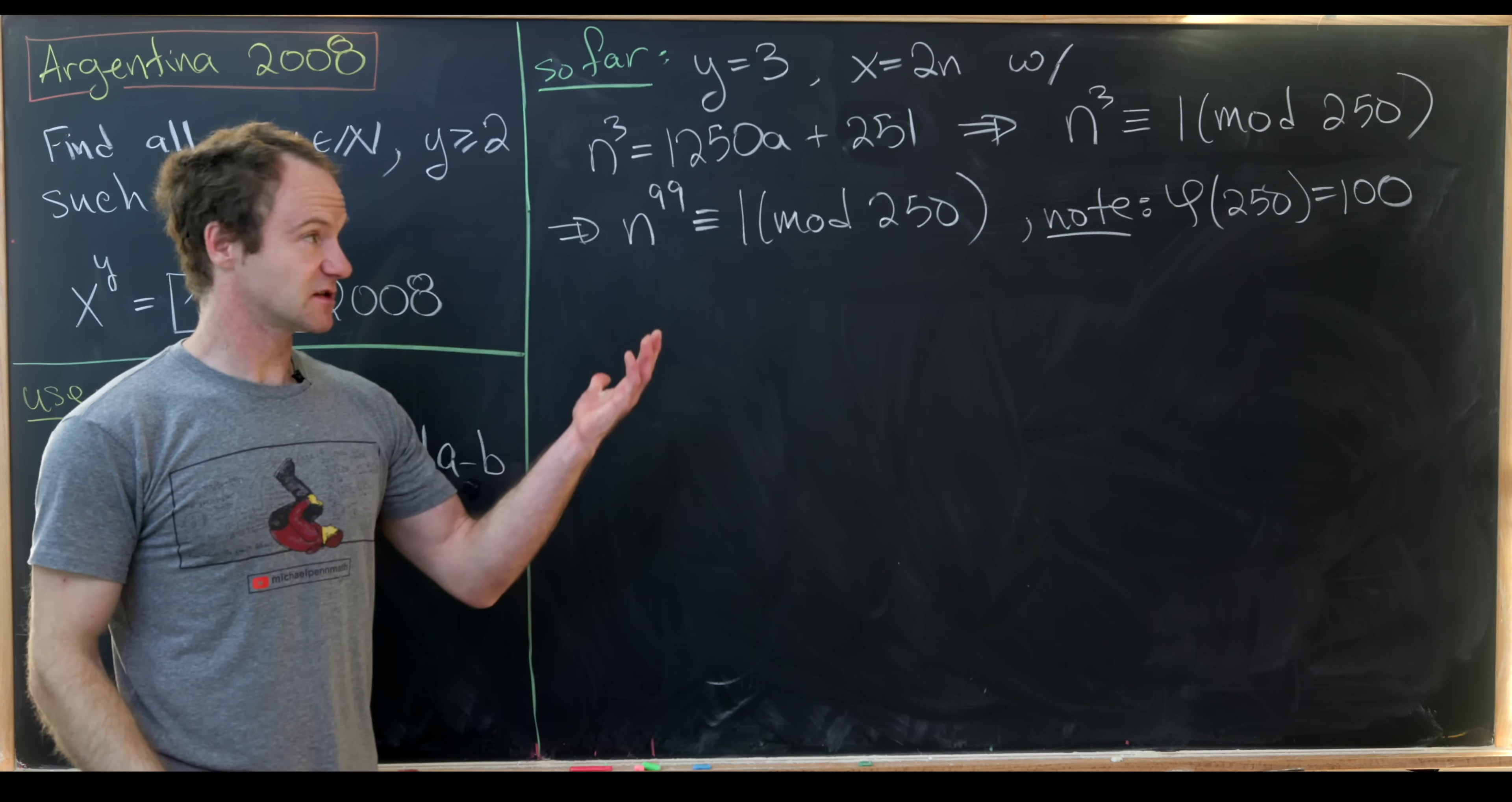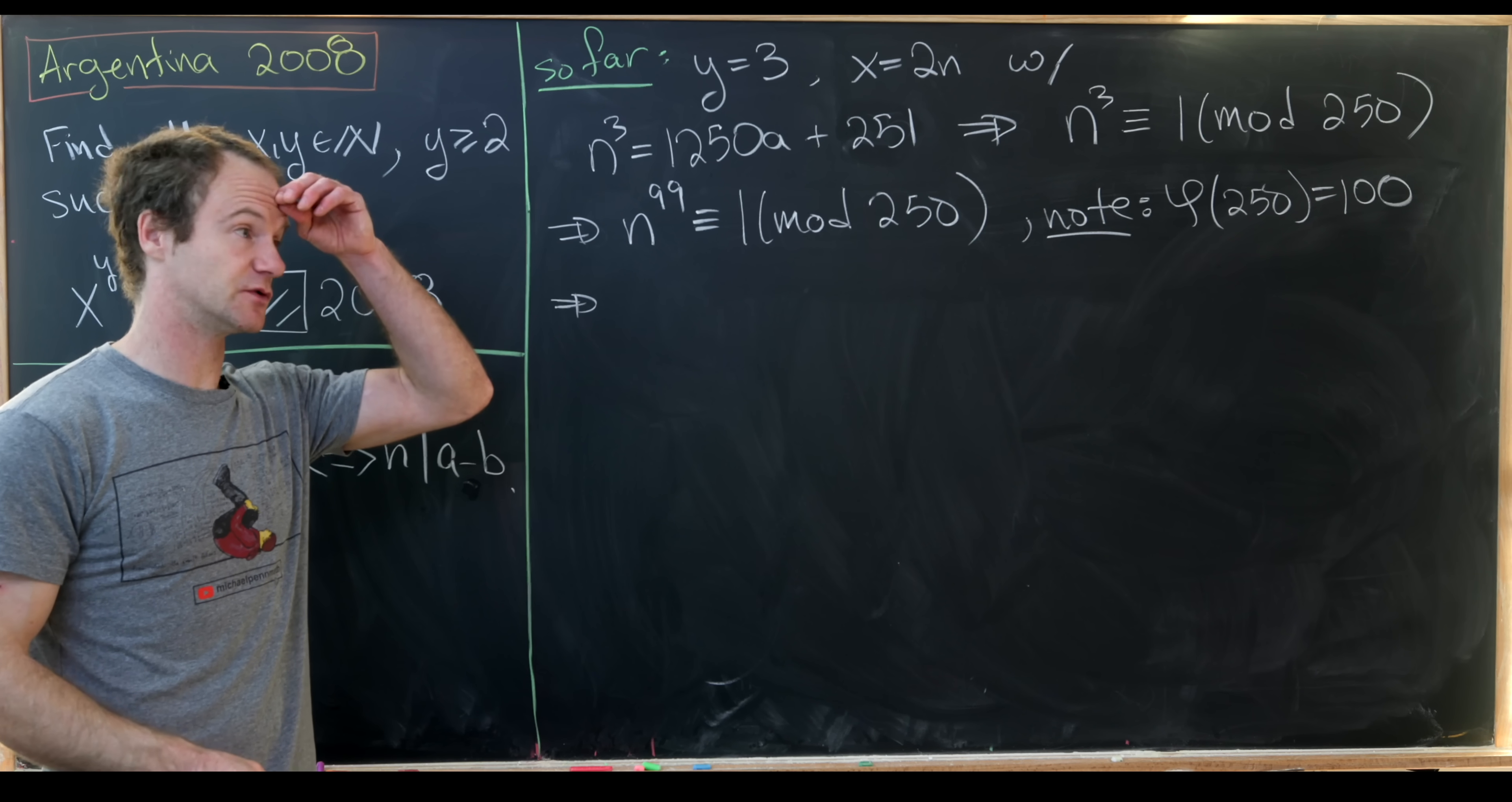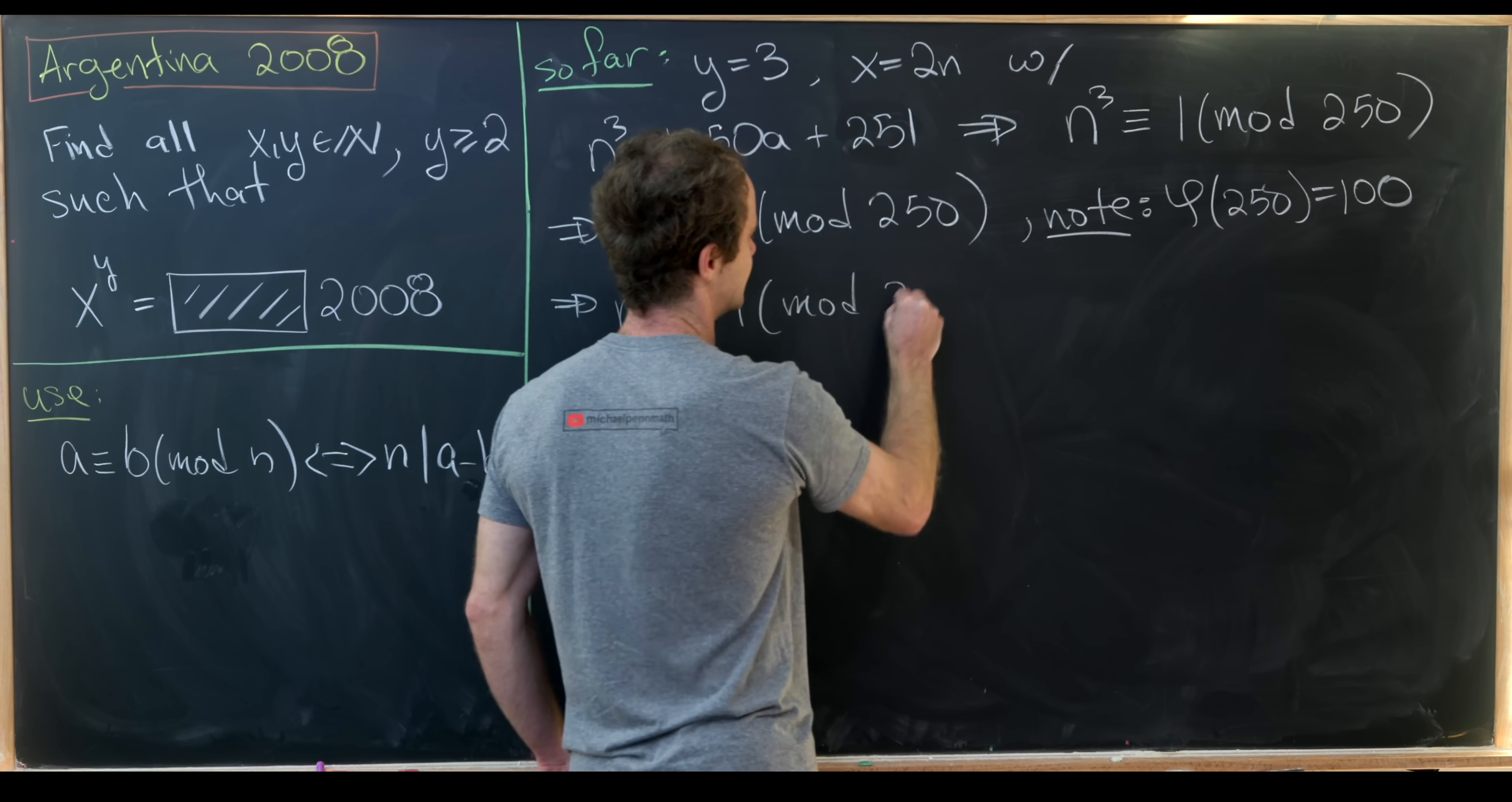Which is particularly helpful because by Euler's theorem we know that n to Euler's totient function of 250 will be congruent to 1 mod 250. So in other words we have n to the 100 is congruent to 1 mod 250.